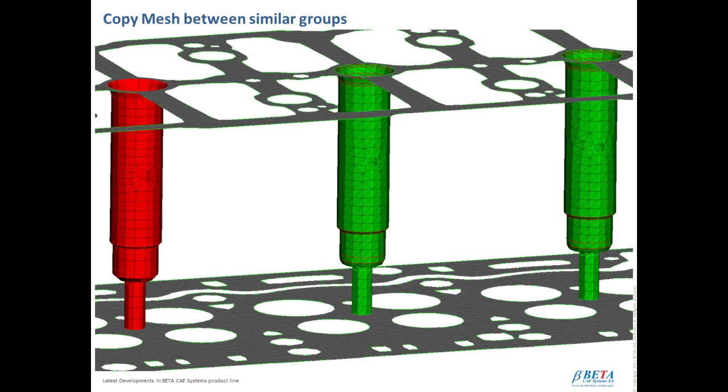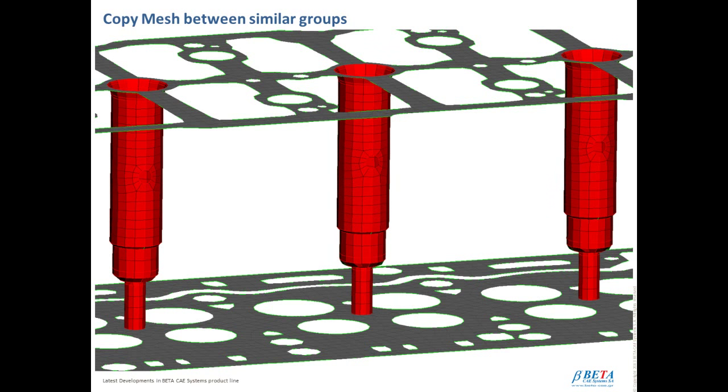Although ANZA already has a prominent position in the field of automation and repeatability of its meshing and not only operations, we keep establishing and complementing new techniques and processes. Towards this direction, in cases where similar groups are detected in the model, a new copy mesh algorithm can create identical mesh among them, thus significantly decrease the overall modeling time and efficiently eliminate the human error factor.